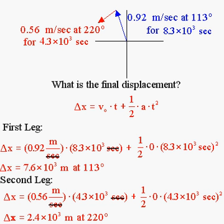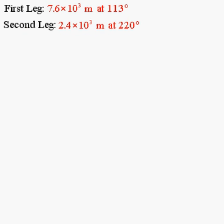Now we have two displacement vectors. The first leg gave a displacement of 7.6 times 10 to the 3rd meters at 113 degrees, and the second leg gave 2.4 times 10 to the 3rd meters at 220 degrees. To find the total displacement, we add them — but since these are vectors, we must add them as vectors. We'll call them vector A and vector B, and we break each into their X and Y components, add the components, then determine the final vector.